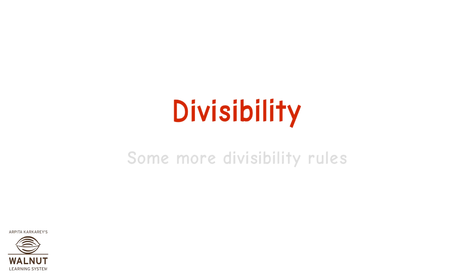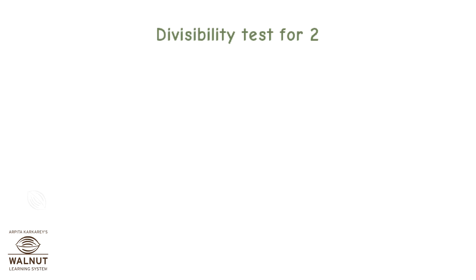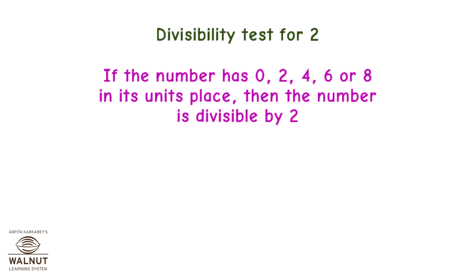Divisibility — some more divisibility rules. Divisibility test for 2: if the number has 0, 2, 4, 6 or 8 in its units place, then the number is divisible by 2.